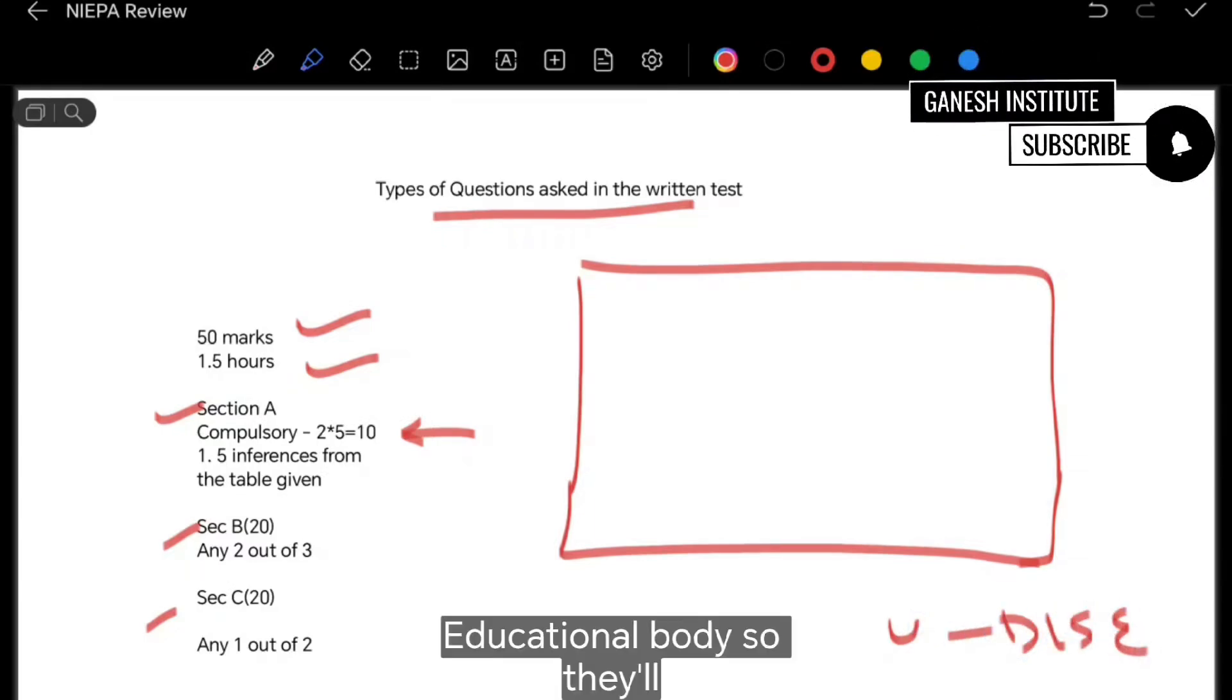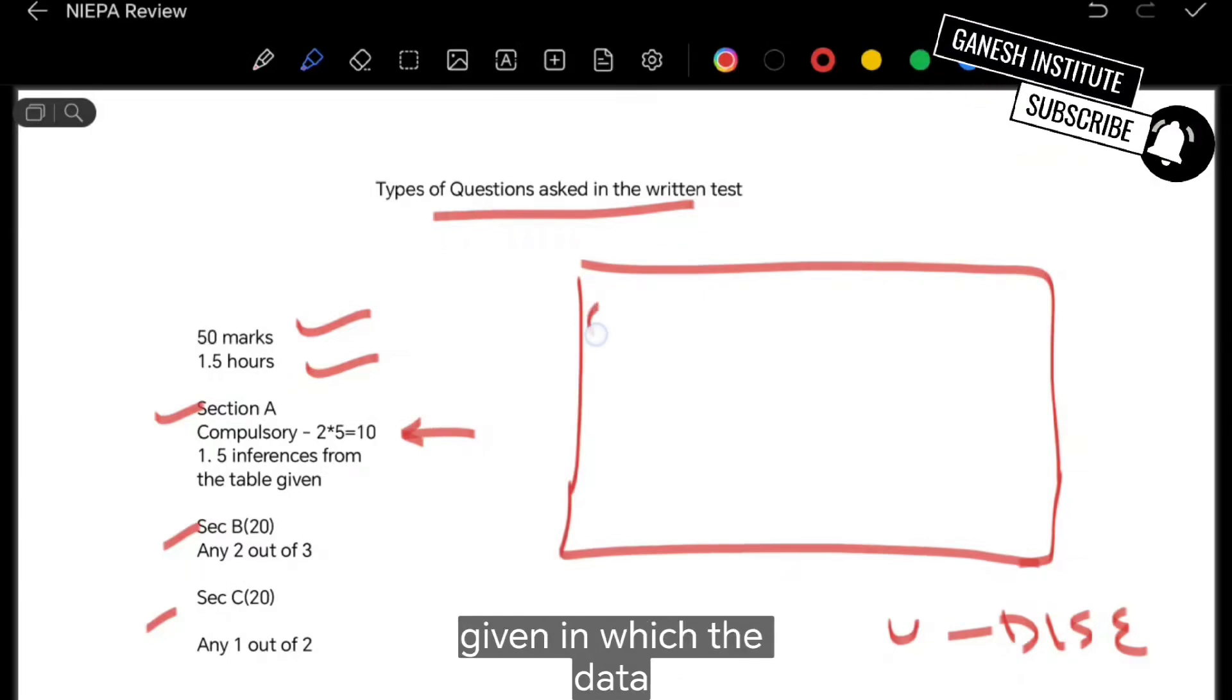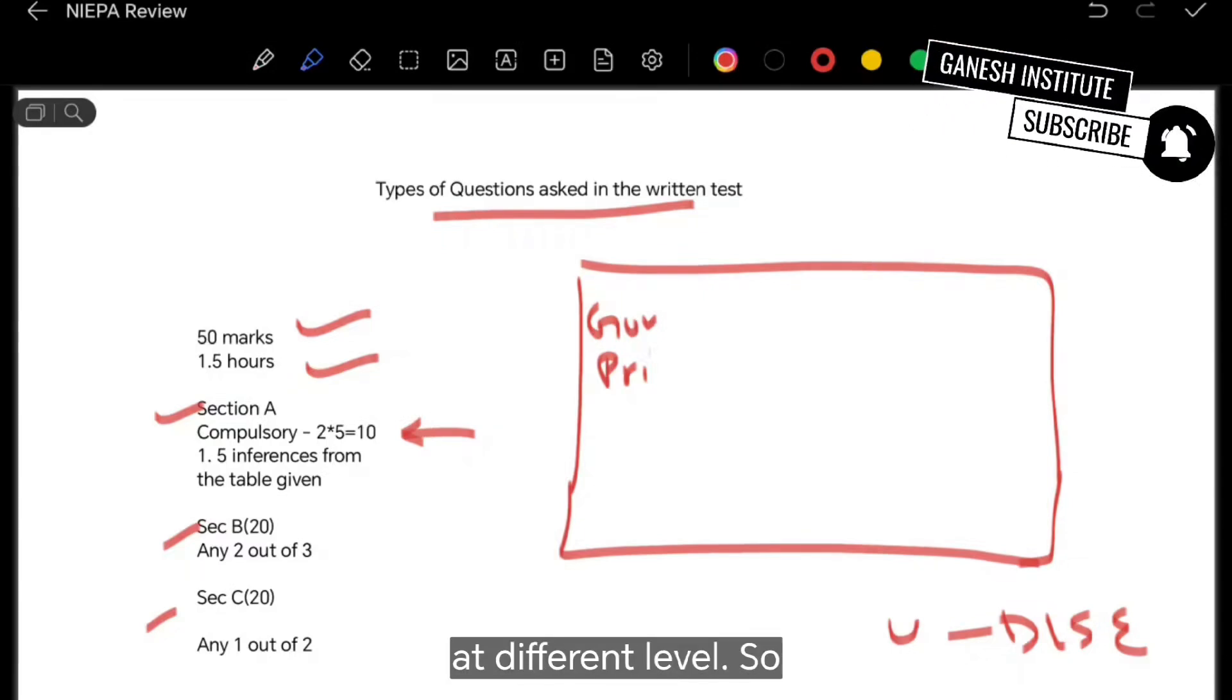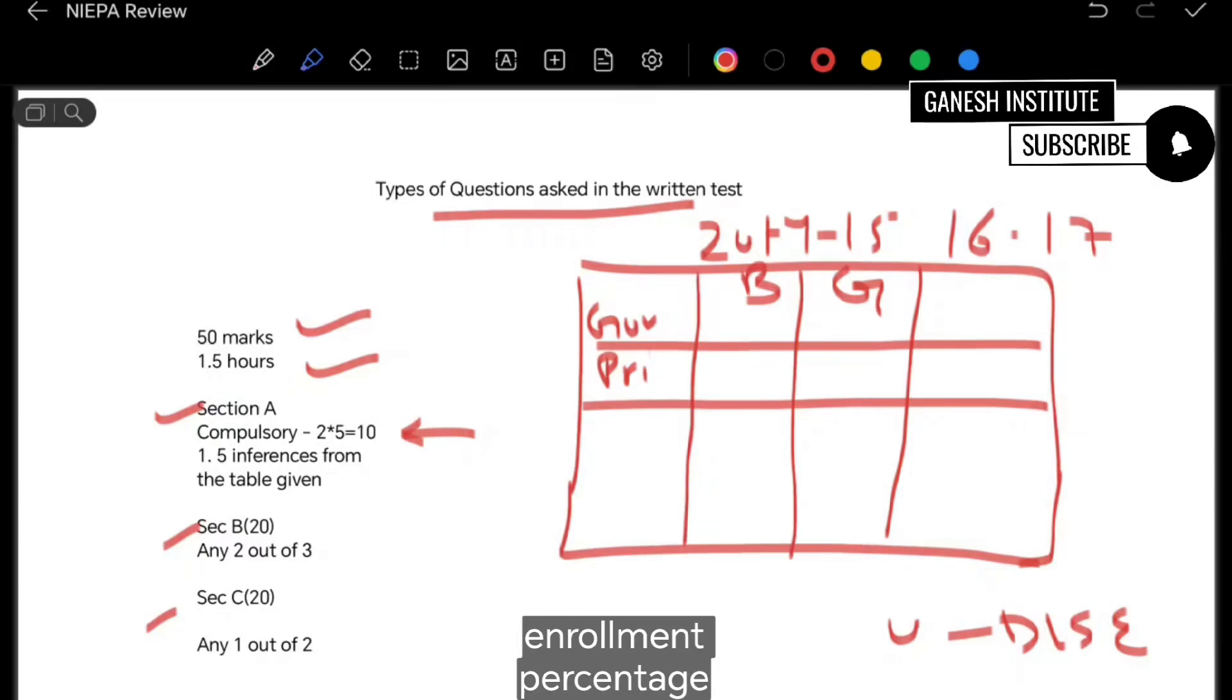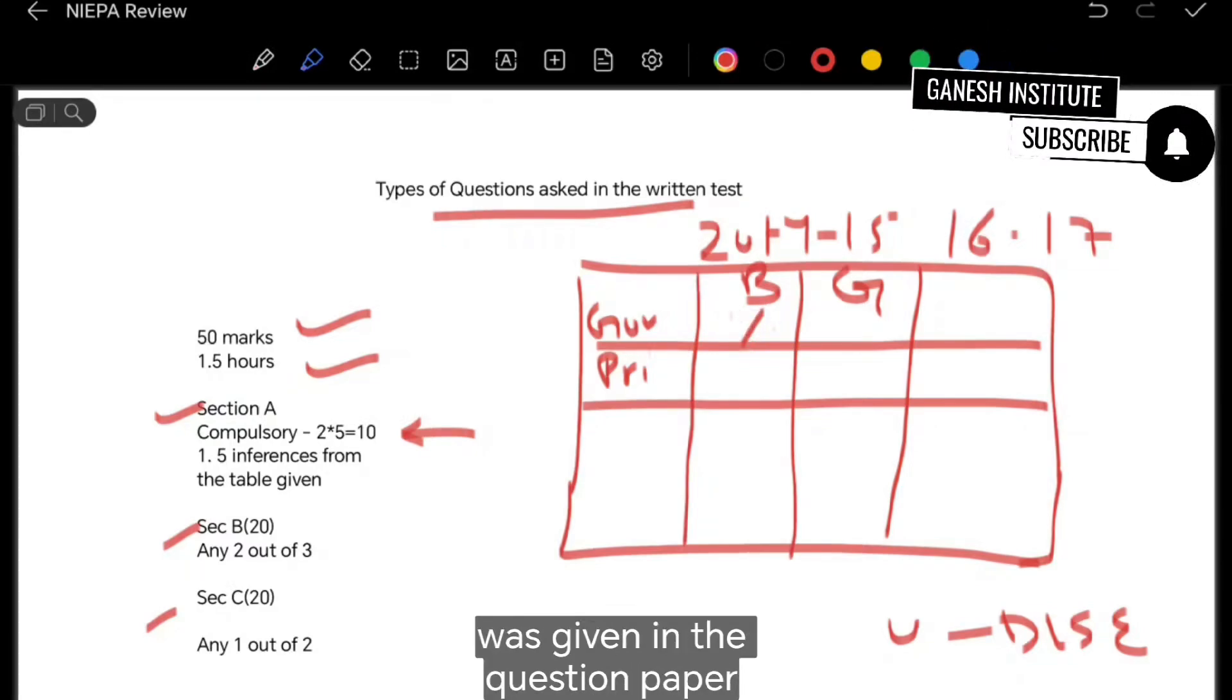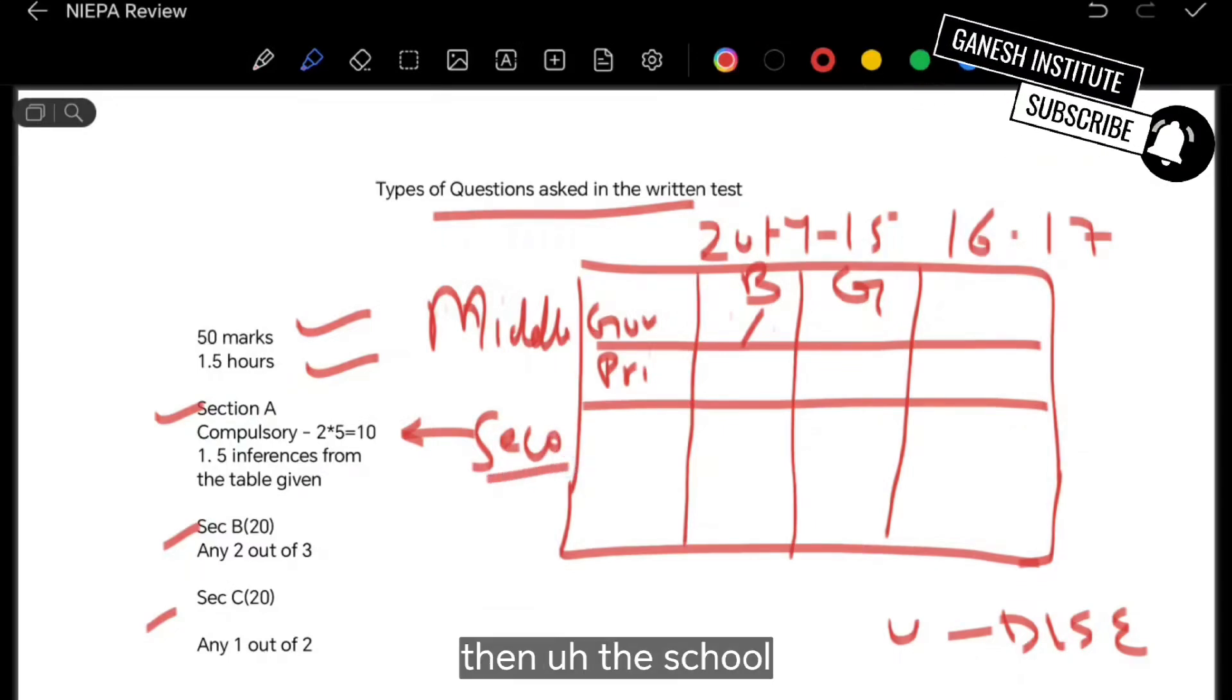So they'll ask you some questions. Let me give you an example of this year. So there was data given in which the data was for government and private institutions at different levels. So the number of enrollments from year 2014-15, 16-17, and so on. Boys and girls from government and private institutions, enrollment percentage was given in the question paper. And it was for middle stage classes from first to eighth, then secondary level nine, ten, and then the school education comprehensively from first to twelve.